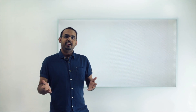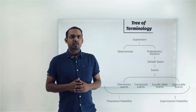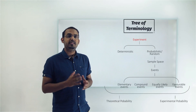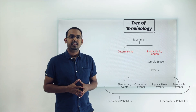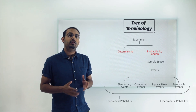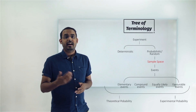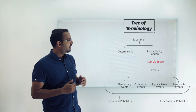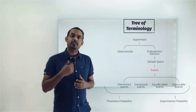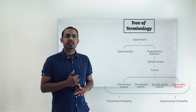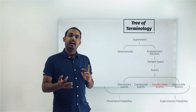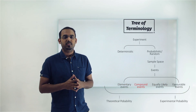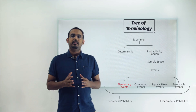Hello everyone. Till now we have looked at all the terms in the tree of terminology of probability. We have seen what an experiment is, the differences between deterministic and probabilistic experiments, how we define the sample space associated with a random experiment, and the types of events — favorable events, equally likely events, elementary events, and compound events. Now let's dive deeper into what probability actually is and how we calculate it.